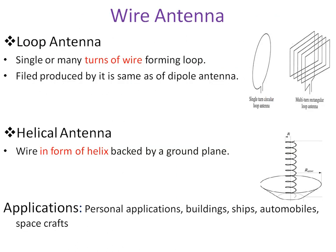The next type of wire antenna is the loop antenna. As you can see in the diagram, it is simply a loop structure made from wire — it can be a single loop or multiple turns of wire formed in a loop. The second is the helical antenna, where we give the shape of a helix to the wire, as you can see in the diagram. Applications of wire antennas overall include personal use, buildings, ships, automobiles, and spacecraft applications.